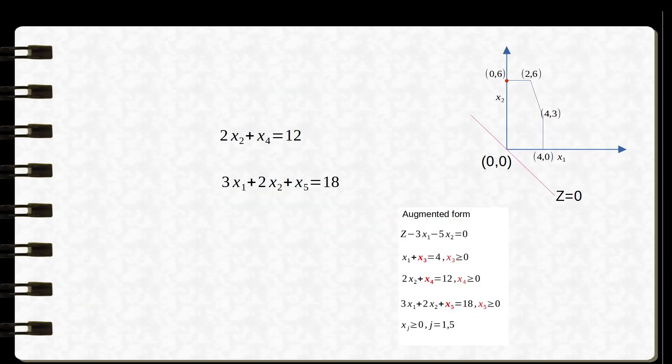Next we need to find the optimal value of z. We analyze z: it is written as z − 3x1 − 5x2. So if we shift 3x1 and 5x2 to the left-hand side, for every unit increase in x1 there is a 3-point increase in z, and for every unit increase in x2 there is a 5-point increase in z. We always go in the direction of the highest increase — that is the direction of x2.